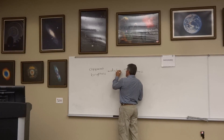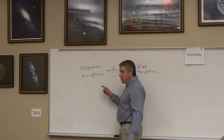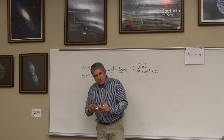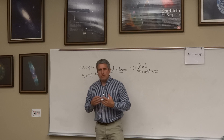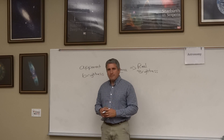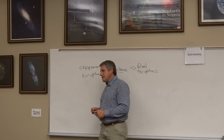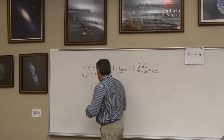If we knew the star's distance, we could take the apparent brightness, combine it with the distance, and figure out the star's real brightness. So the question then is: how do we measure the distance to stars?